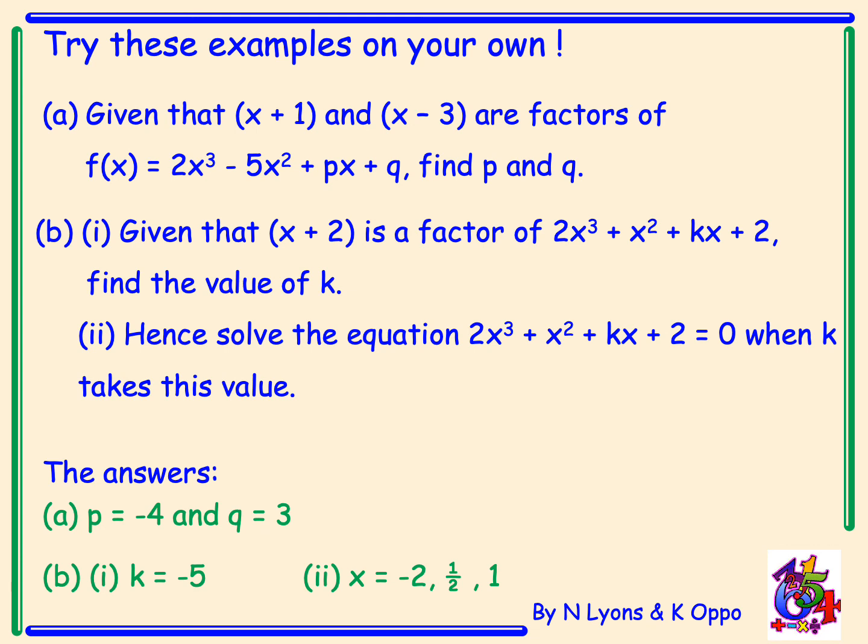And b, part 1, k is negative 5. And then for part 2, solving the equation, we get an answer of x equals negative 2, 1 half and 1.